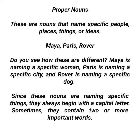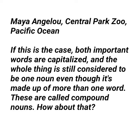Do you see how these are different? Maya is naming a specific woman, Paris is naming a specific city, and Rover is naming a specific dog. Since proper nouns name specific things, they always begin with a capital letter. Sometimes they contain two or more important words — if that is the case, both important words are capitalized, and the whole thing is still considered one noun even though it's made up of more than one word. These are called compound nouns.